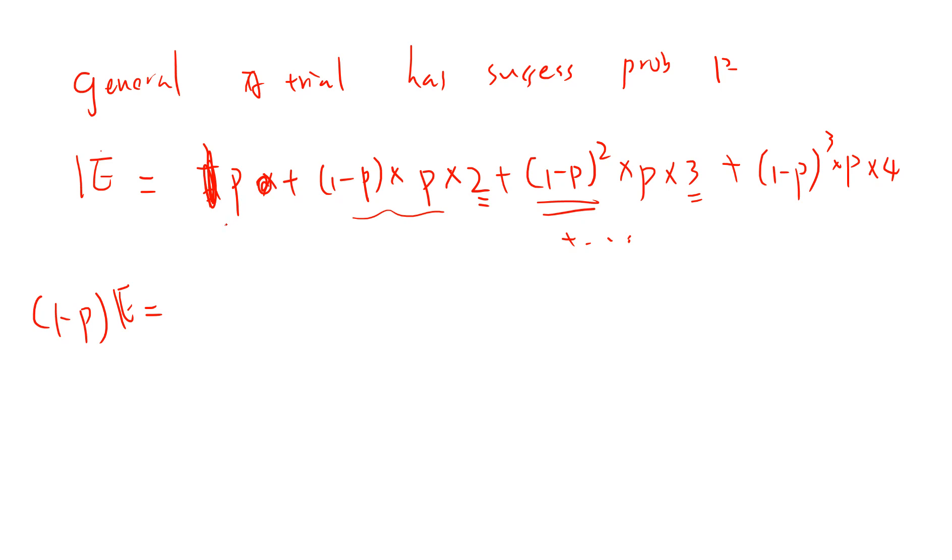Computing it is very easy. I just use (1-p) times E. The first one I write as p, this one I write as (1-p)p plus this term times (1-p), so I get (1-p)²·2p, and this one I get (1-p)³·3p.